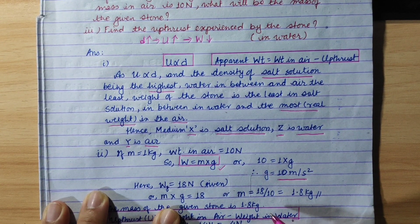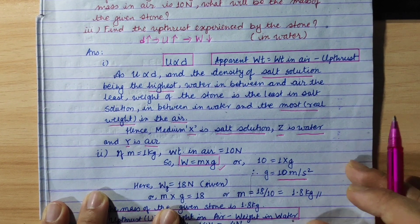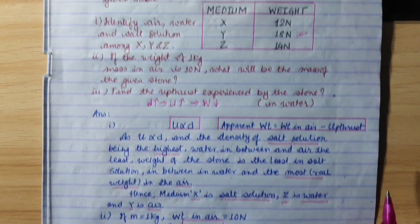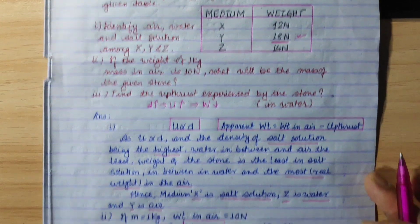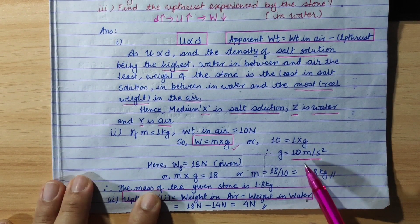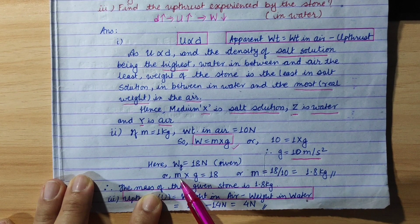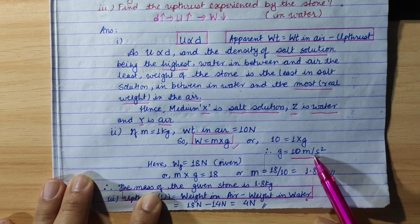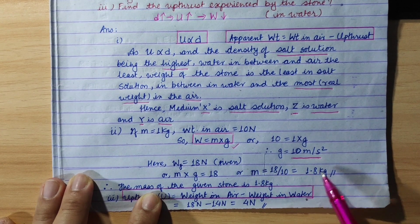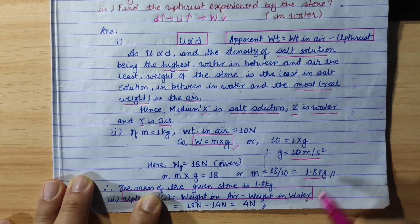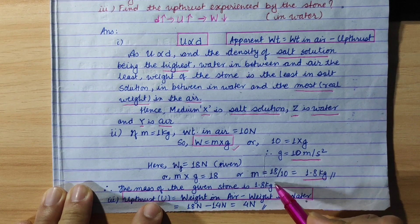This is given. Weight equals 10 newton, mass equals 1 kg, g equals 10 m/s². Now for the actual stone, the weight in air is 18 newton (from medium Y). So mass equals weight divided by g, which is 18 upon 10, meaning 1.8 kg. Therefore, the mass of the given stone is 1.8 kg.